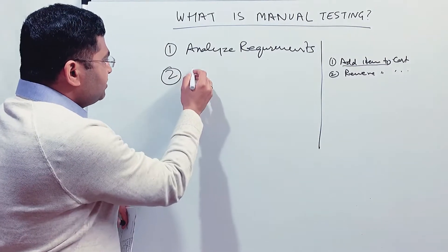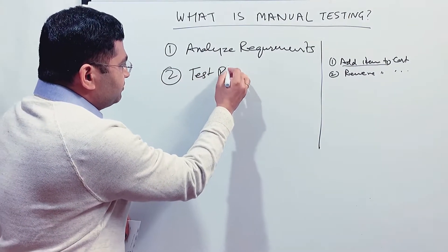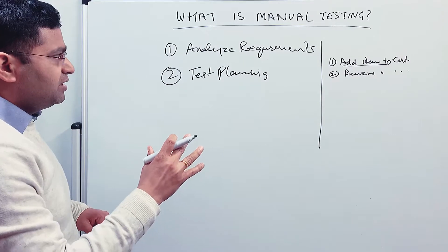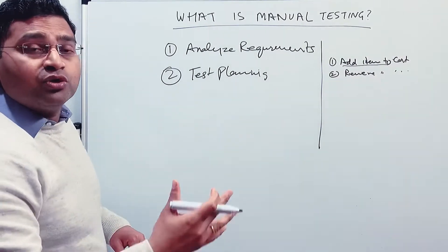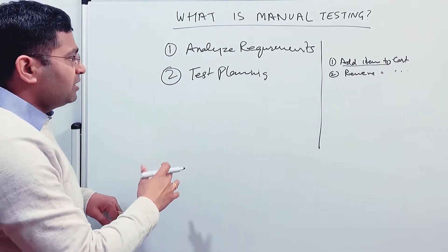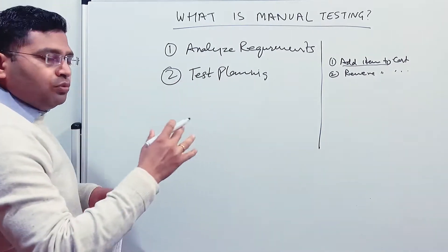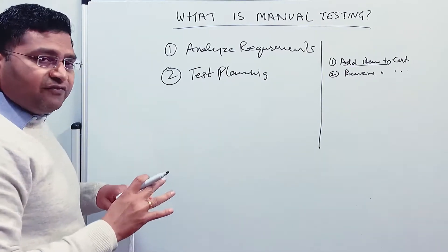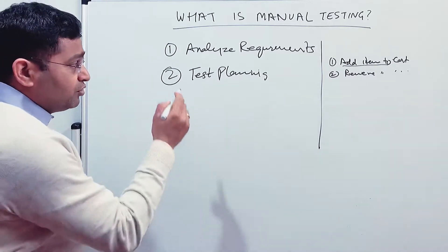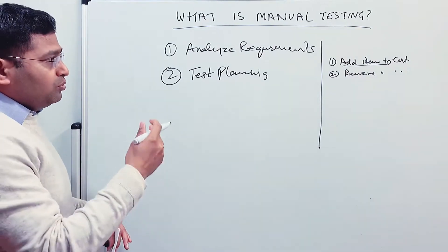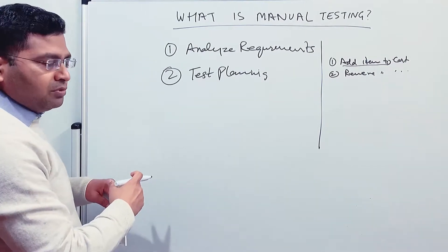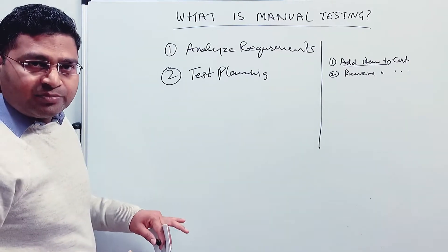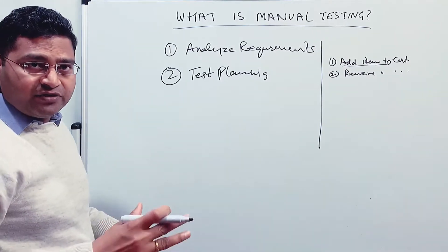The next phase is test planning. Once you understand the requirement, you plan how you are going to test all the requirements you have. In the test plan phase, you brainstorm and write the overall plan. If you're following waterfall or V model, which run for quite a long period of time, you write a detailed test plan — a master test plan and then phase-level test plans.